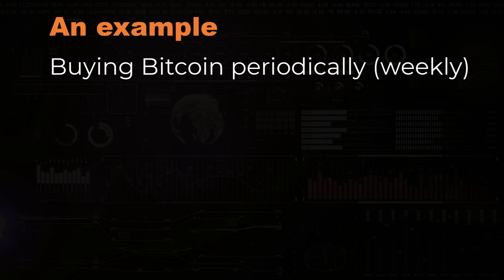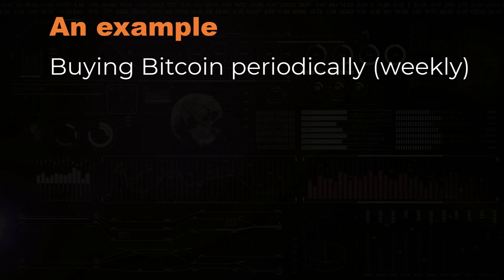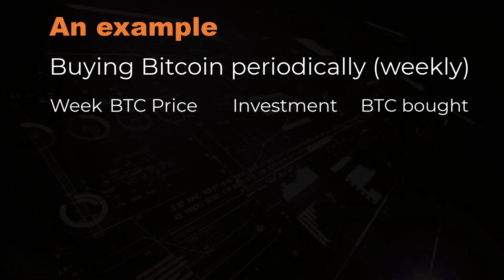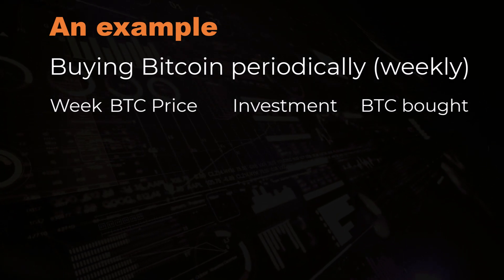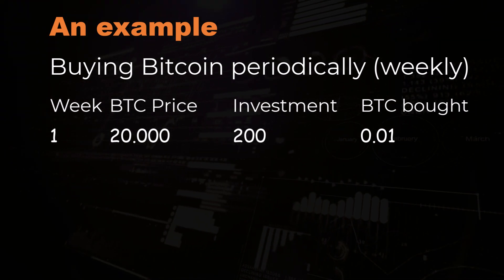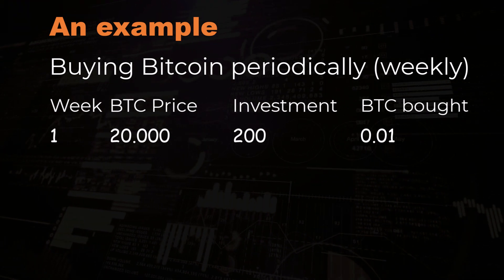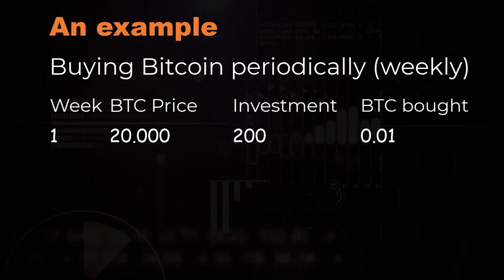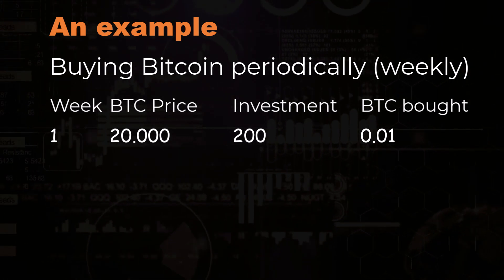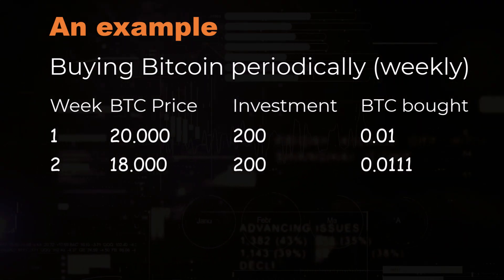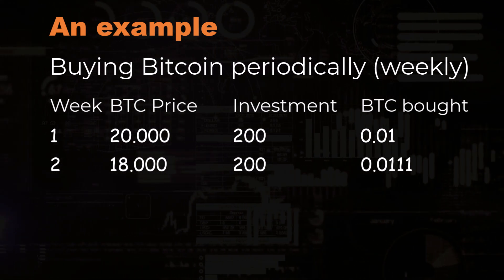Let's do an example. Say that you periodically buy bitcoin every week on Sunday for example, and you do this for the next coming 4 weeks. First, the bitcoin price is $20,000 and you invest an amount of $200, so in this case you buy 0.01 BTC. Now when the price is at $18,000 and you still invest $200, then you can even buy more BTC.